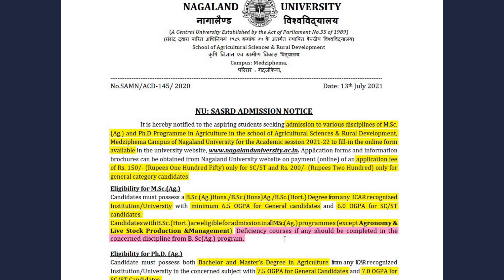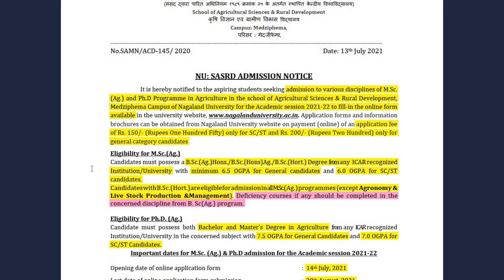Deficiency courses, if any, should be completed in the concerned disciplines from the BSc program. For PhD Agriculture, candidates must possess both Bachelor's and Master's degrees in Agriculture from an ICAR Recognized Institution or University, with 7.5 OGPA for general candidates and 7.0 OGPA for SC/ST candidates.